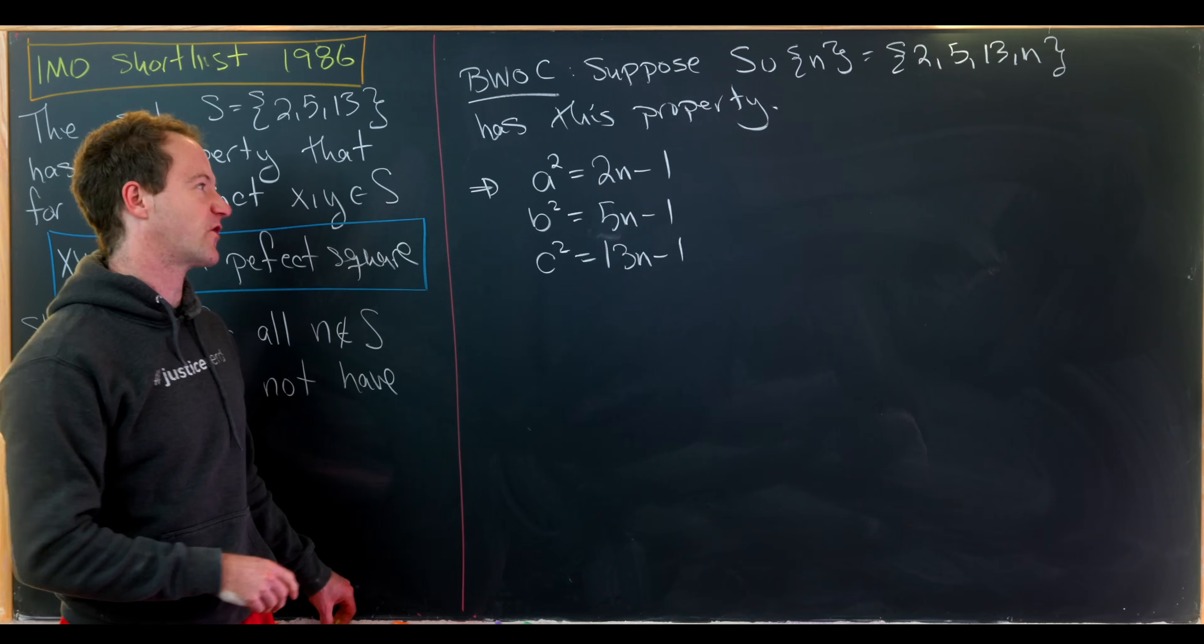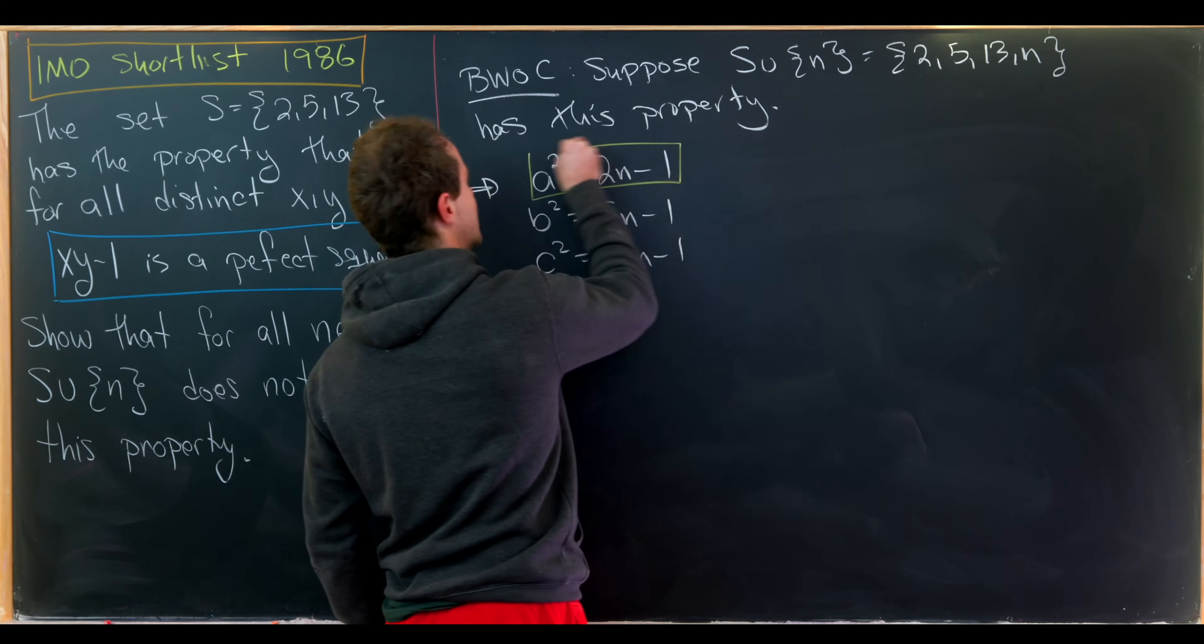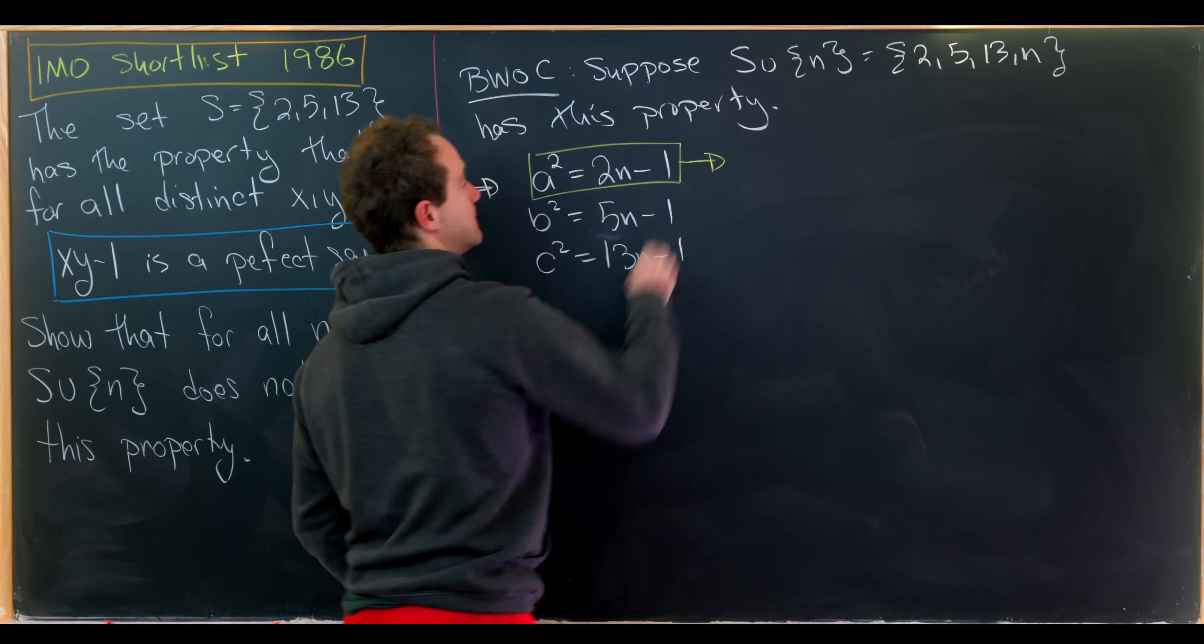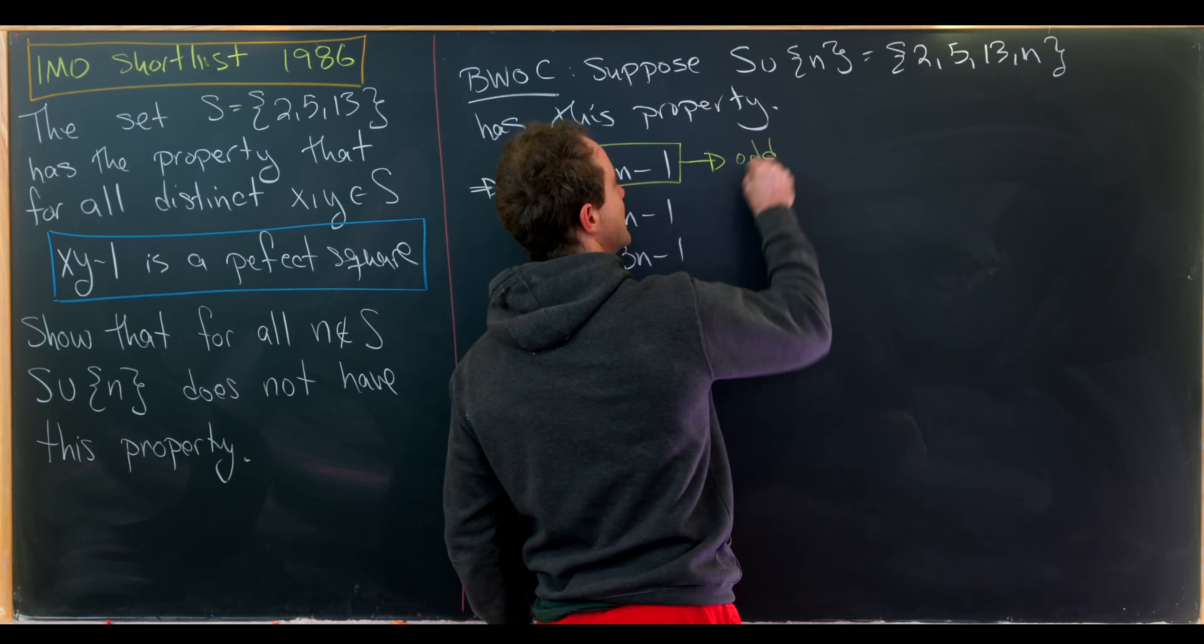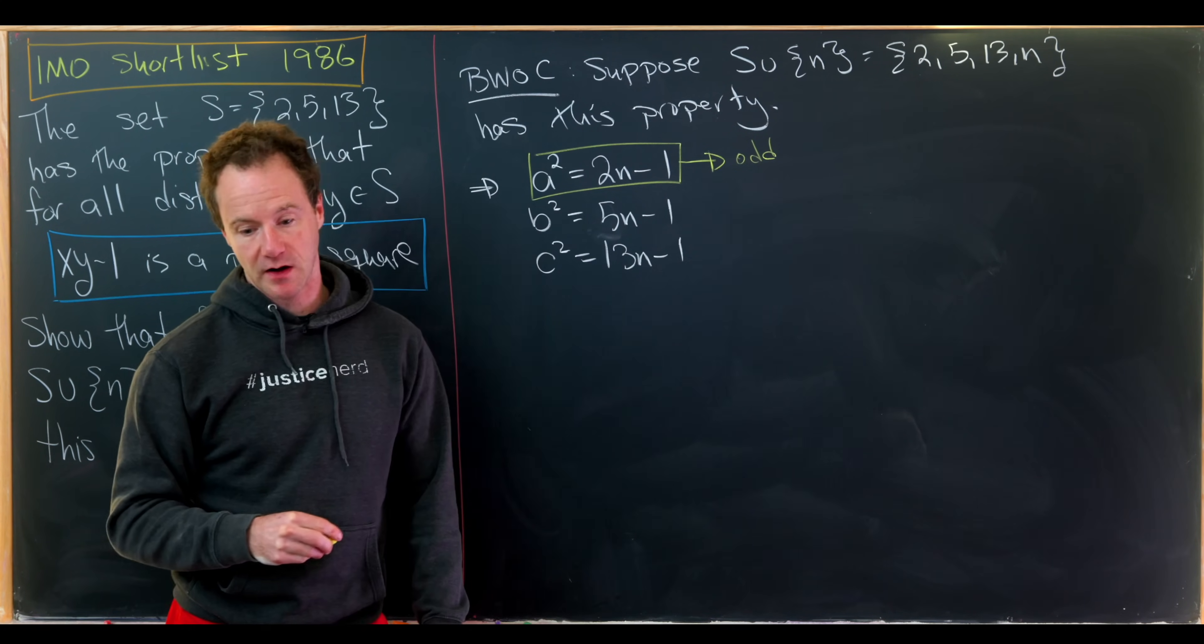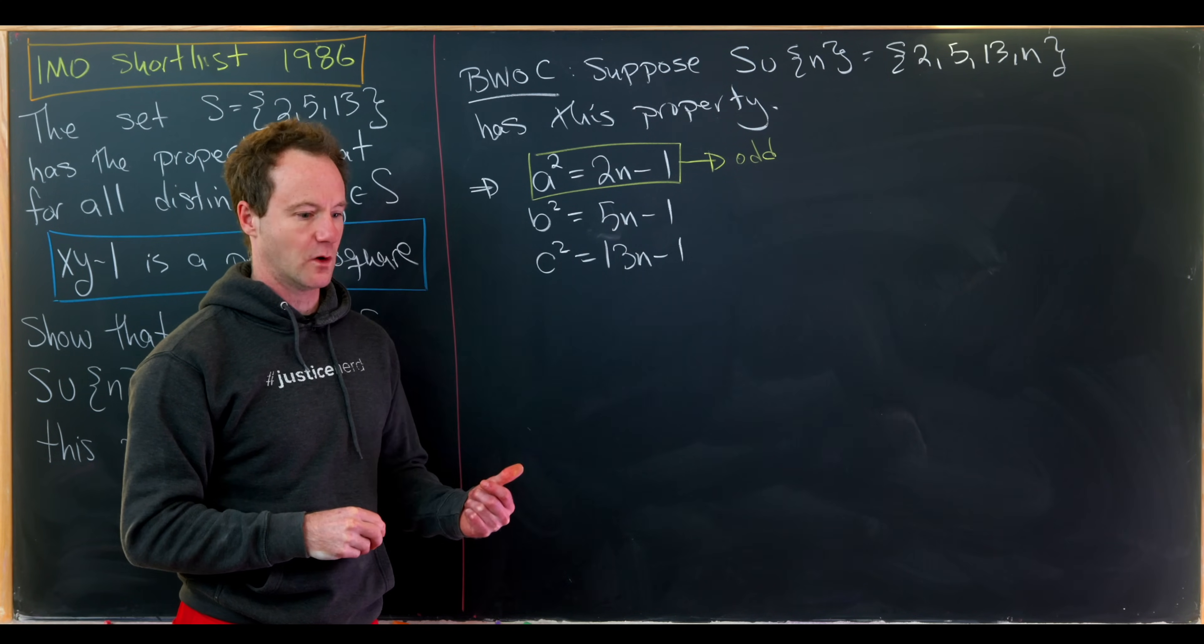And now let's work off this first bit of information that a squared is equal to 2n minus 1. Well, let's notice that this is odd and it's a perfect square.